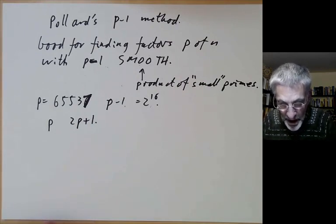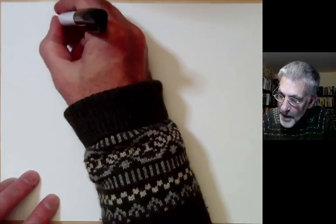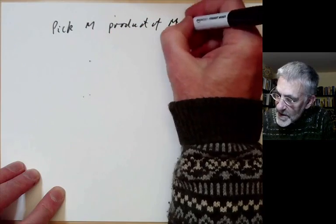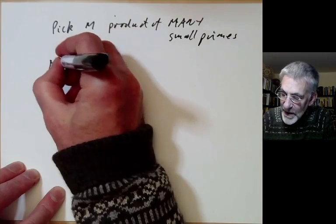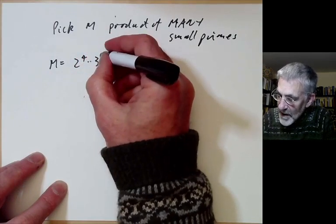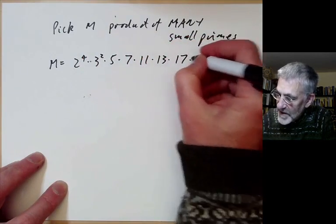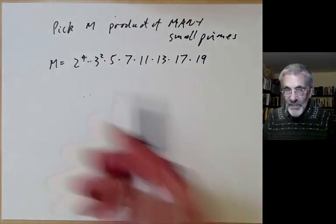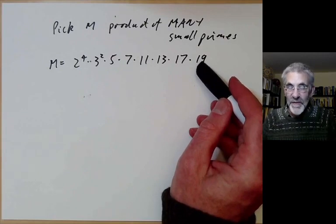What we do is we pick some number m, which is a product of many small primes. So we might pick m equals 2 to the 4 times 3 squared times 5 times 7 times 11 times 13 times 17 times 19. Here we've taken all prime powers that are at most 20, and this would be a fairly typical choice for m, except of course, instead of going up to 20, if you had a big computer, you might go up to a few billion or something.